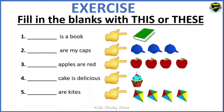Now let us do some exercises. You need to fill in the blanks with 'this' or 'these.' The first one: ___ is a book. We are talking about one book — that is singular. So the answer is 'This is a book.' Next: ___ are my caps. We are talking about plural, many caps. So the answer is 'These are my caps.'